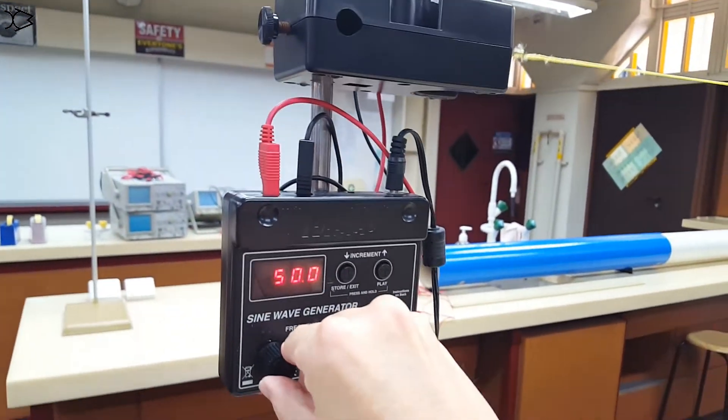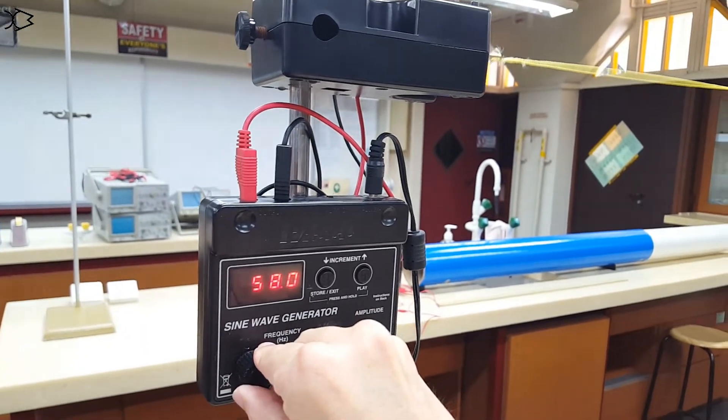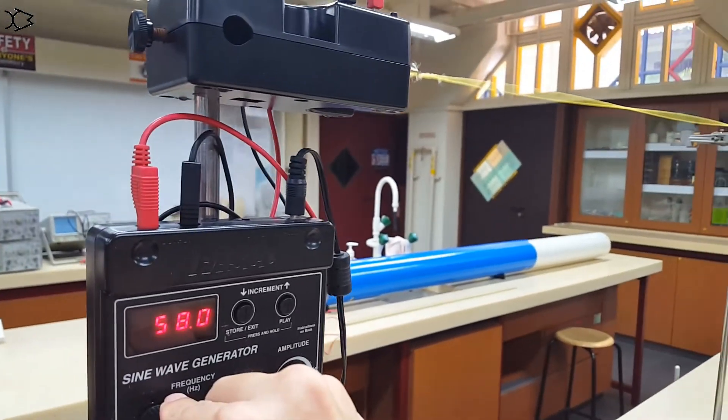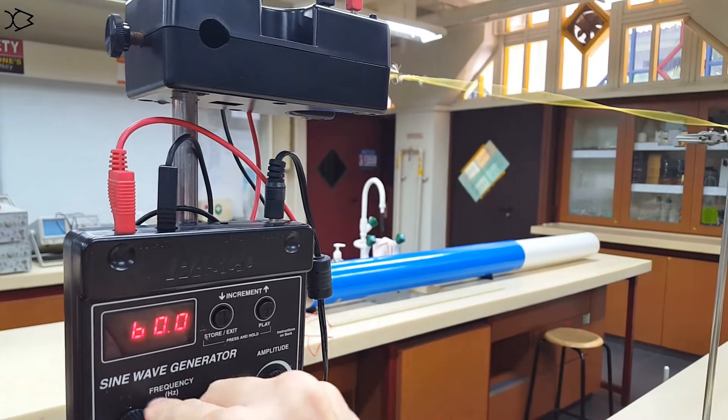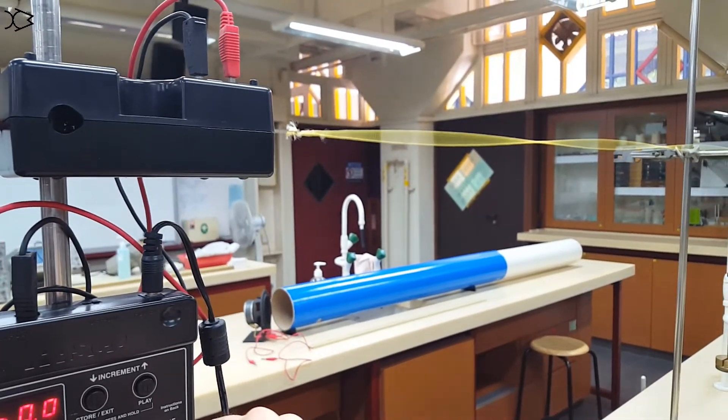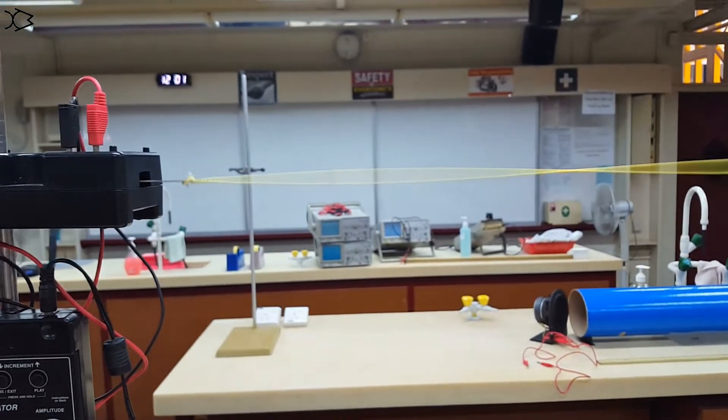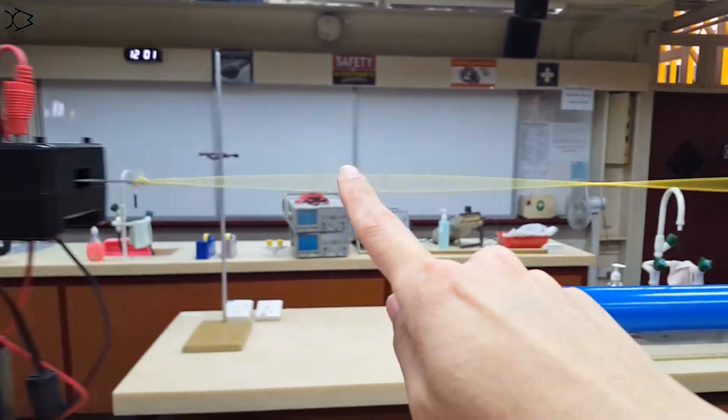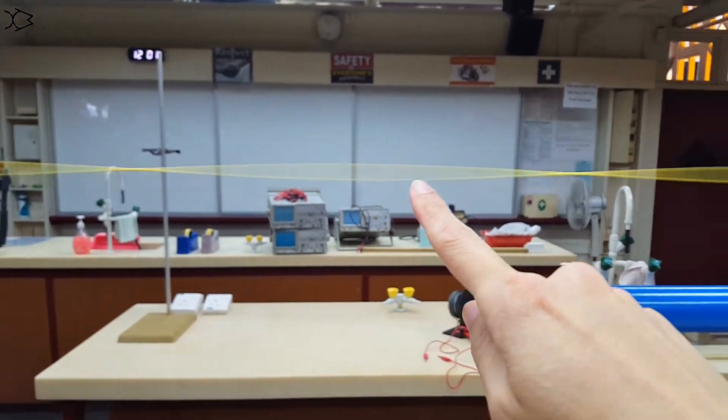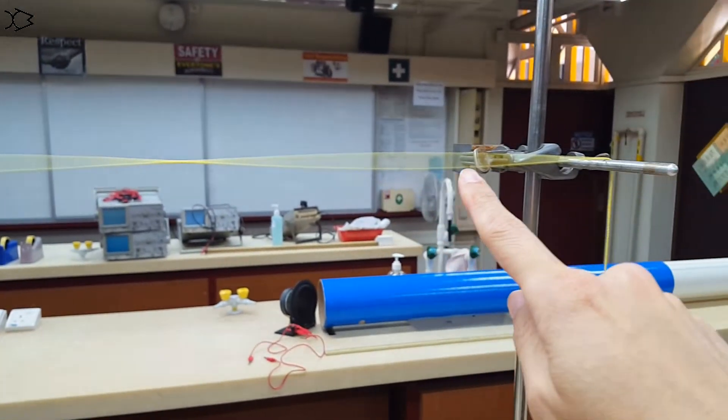But when we hit the next resonant frequency, about here, you get the next resonance. So this is the third harmonic. We got a node here, antinode, node, antinode, node, antinode, node.